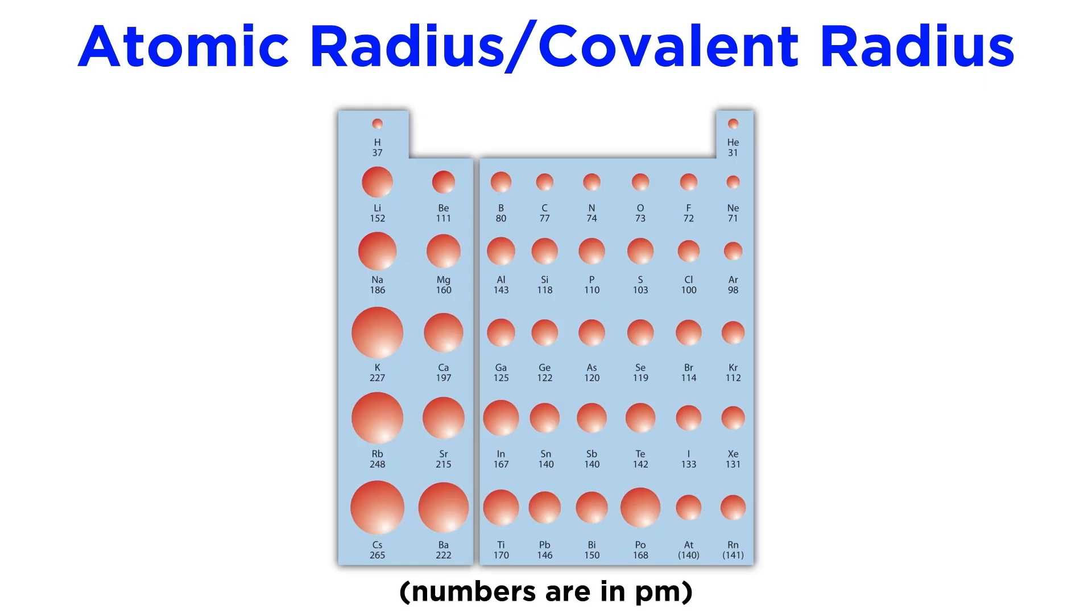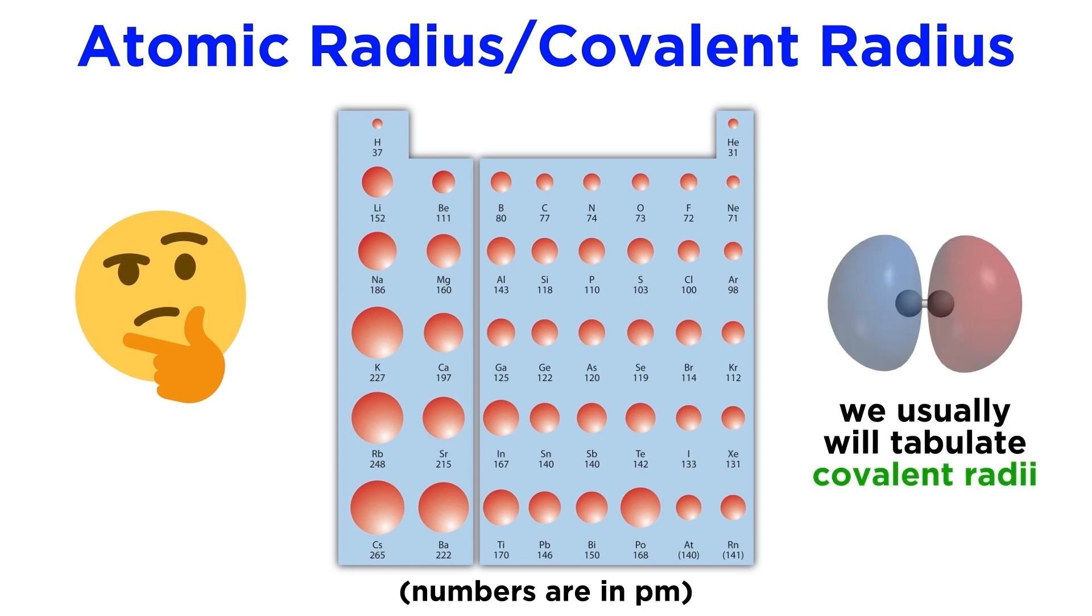The first property we will look at has to do with the size of an atom, or the atomic radius. It's difficult to measure the radius of a lone atom, so the convention is to tabulate lists of covalent radii, which are defined as one half the distance between the nuclei of two identical atoms that are bonded to each other. This should be roughly the same as the radius of the atom outside the context of a chemical bond as well.